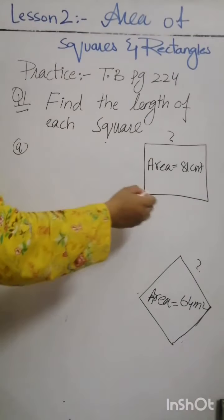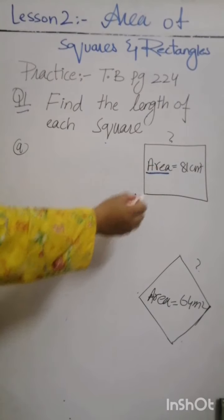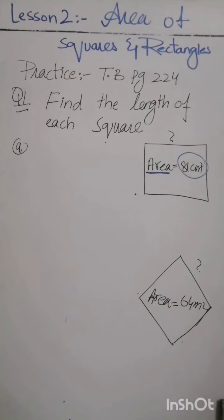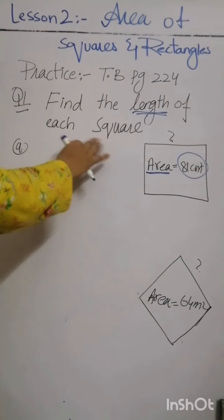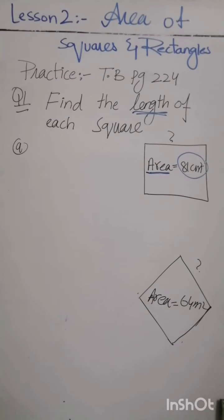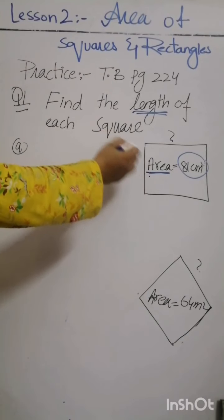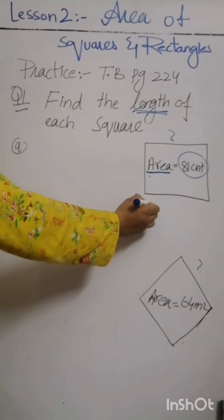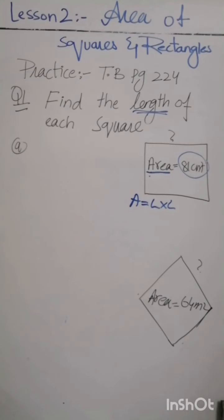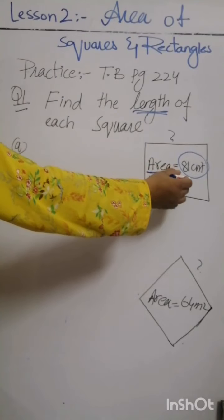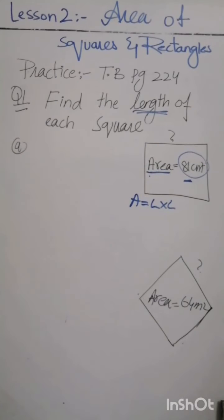A square is given and its area in centimeter squares is given. We have to find out the length. Basically, what is the formula for the area of a square? Area is equal to length multiplied by length. So we have to find a number that, when multiplied by itself, gives the area. Let's say we have 81 centimeter square.